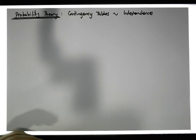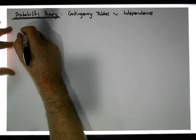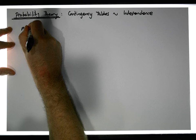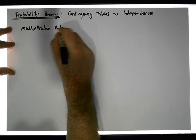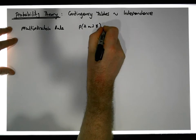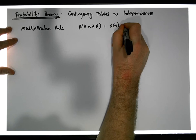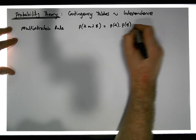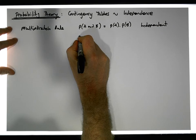More importantly, we'll cover the multiplication rule — independence within the multiplication rule. The multiplication rule says that the probability of A and B is equal to the product of the probabilities: probability of A times the probability of B, when the two events A and B are independent of each other.